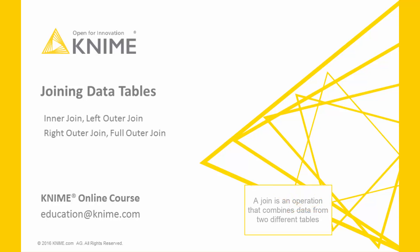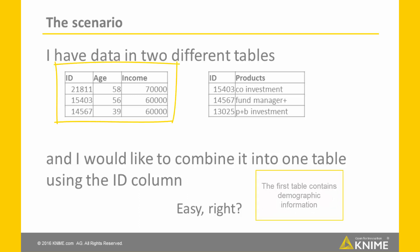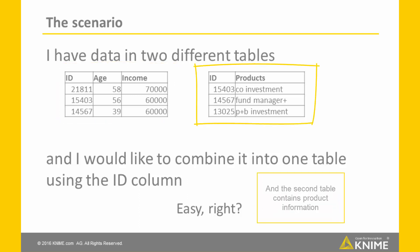A join is an operation that combines data from two different tables. In this video, I have data about customers on two different tables. The first table contains demographic information, and the second table contains product information.